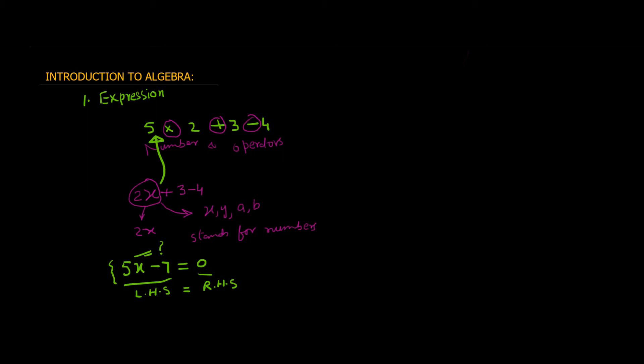The purpose of this first lecture is to get you familiar with some of the terms — English terms — which we will be commonly using during this course. Now we will talk about what is an algebraic term. An algebraic term has three components: it has a letter, it has a number — a signed number which could be positive or negative — and it has an exponent. So an algebraic term can have the form minus 2X raised to the power 3.